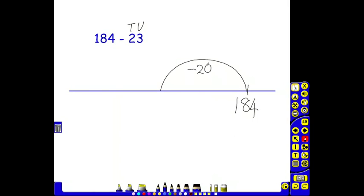Some children might decide to jump back in 2 lots of 10, which is fine. 184 take away 20 is 164. We've taken away the tens, now we need to take away the units. We've got 3 units. Some children might want to jump back in ones. Hopefully they'd be able to jump back in a whole 3. 164 take away 3 is 161. And that gives us our final answer of 161.